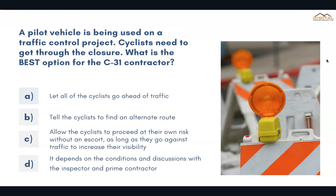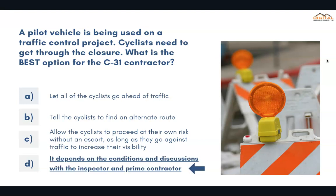A pilot vehicle is being used on a traffic control project. Cyclists need to get through the closure. What is the best option for the C31 contractor? The correct answer is D: it depends on the conditions and discussions with the inspector and prime contractor.